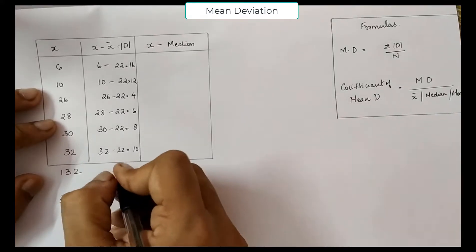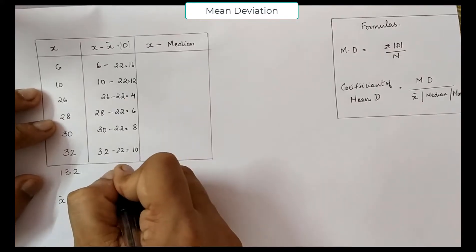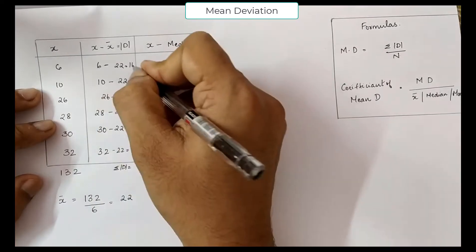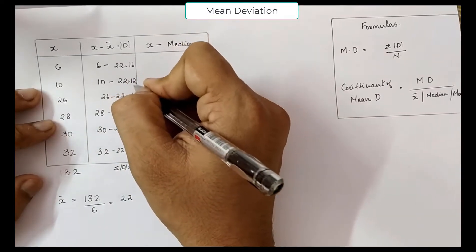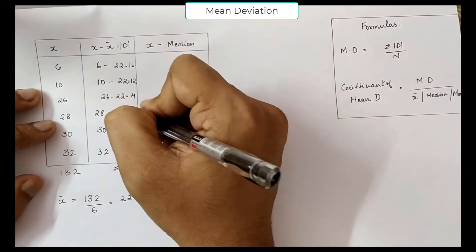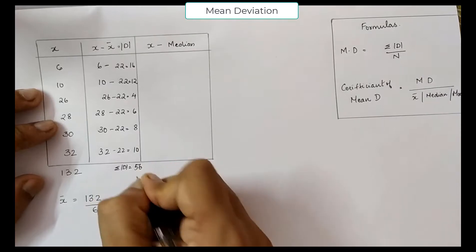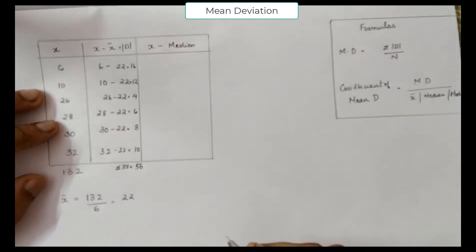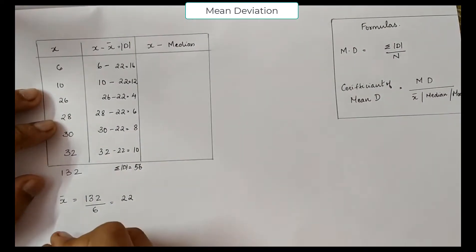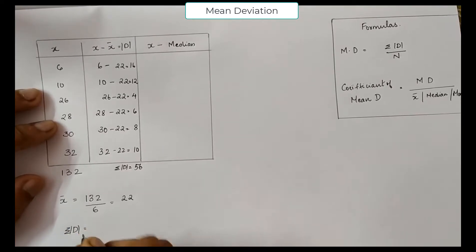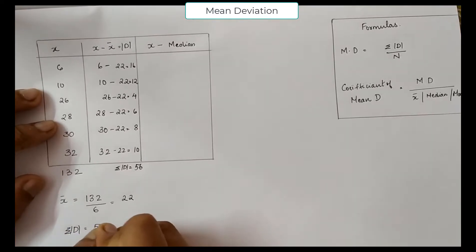Now you are supposed to find the total. Sigma D (the sum of the absolute deviations) is equal to 16 plus 12 plus 4 plus 6 plus 8 plus 10, which gives you 56. So the modulus of sigma D is 56.